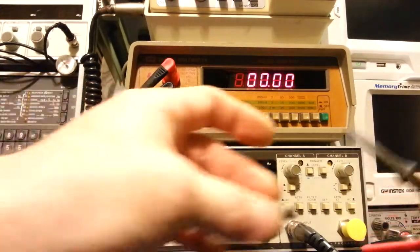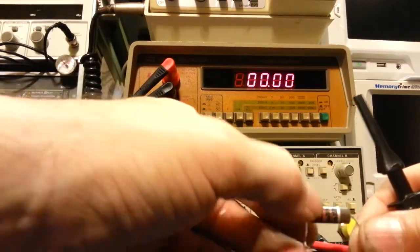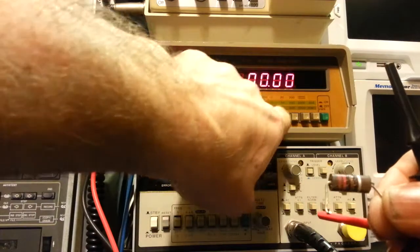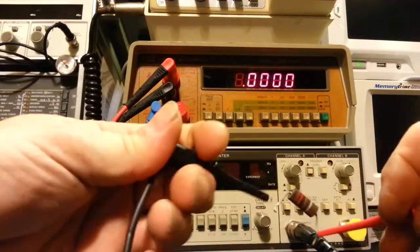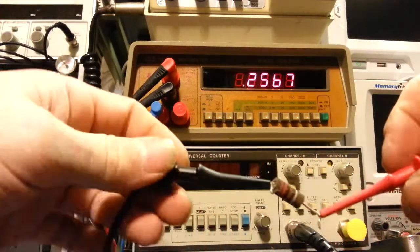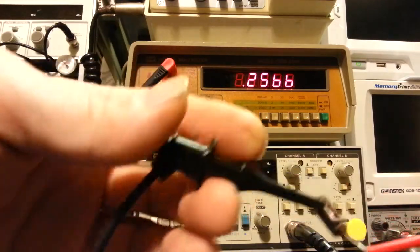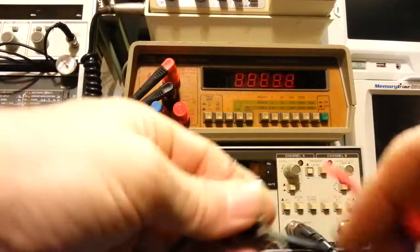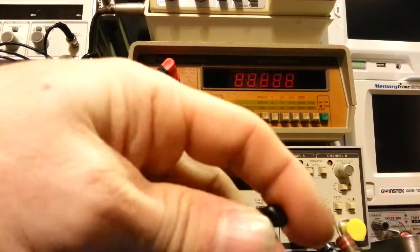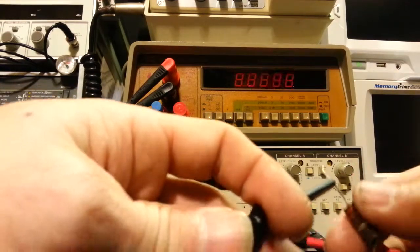Let's try some other ones here. We've got, and we can reduce the scale range, because this one's going to be red, red, brown. So that's 220 ohms. So we'll go to the 2K range. So it's supposed to be 220, it's measuring 256.7, so that's not bad. 244, again, not bad.